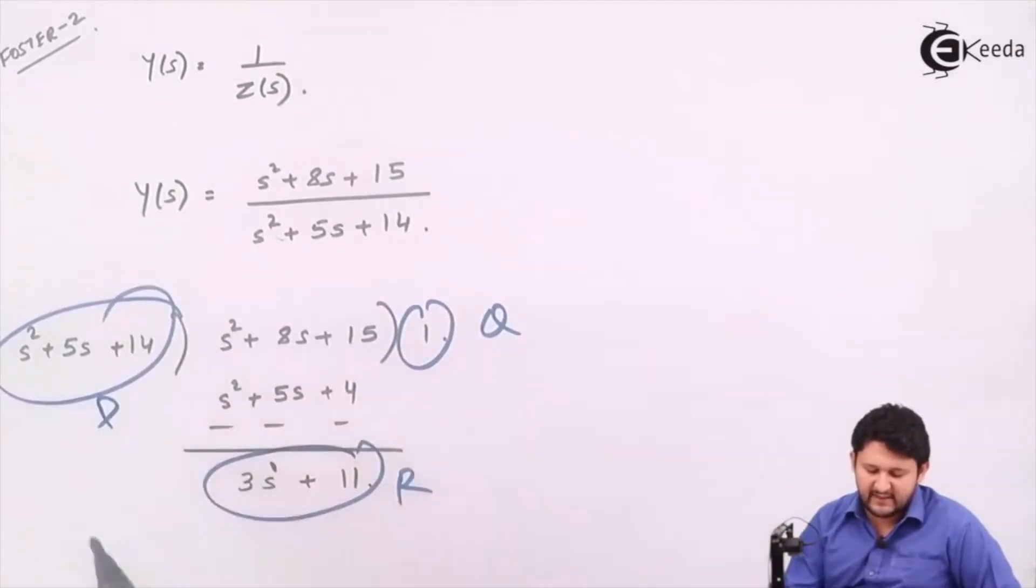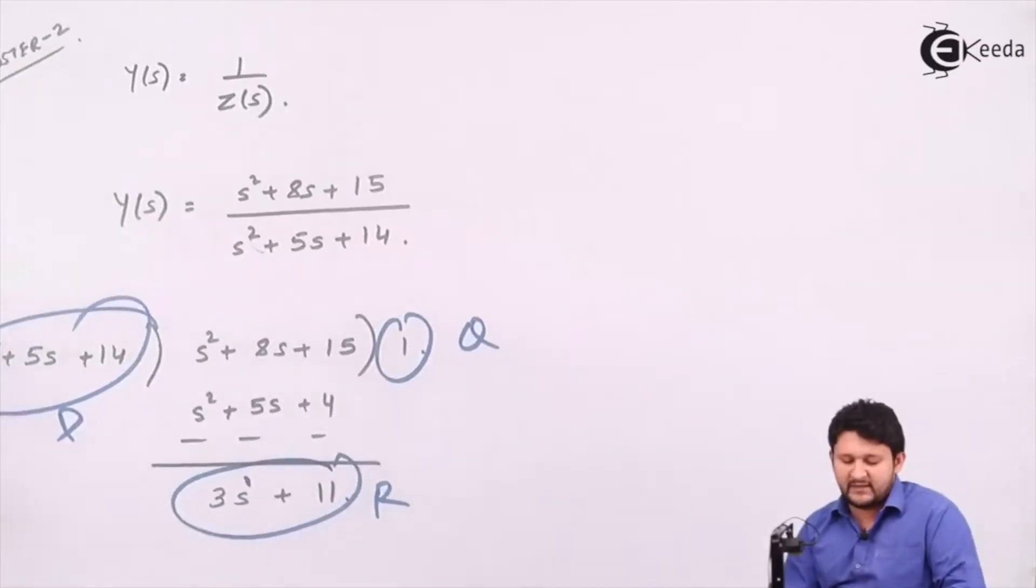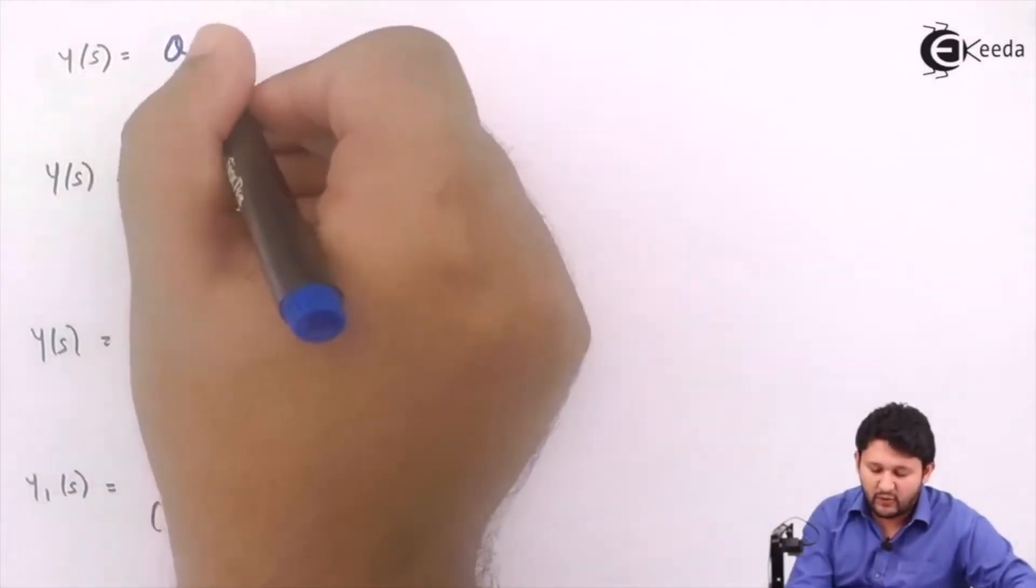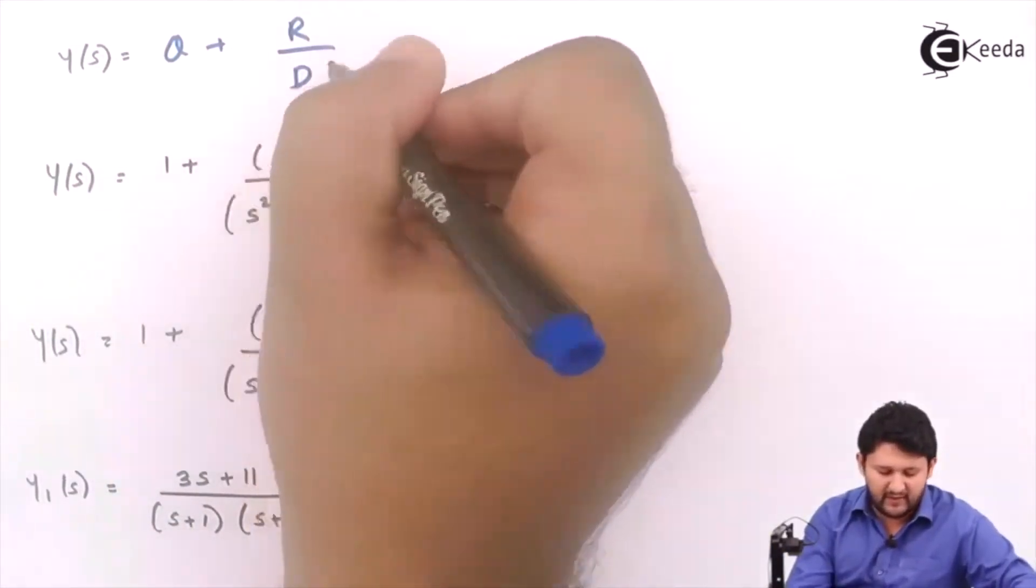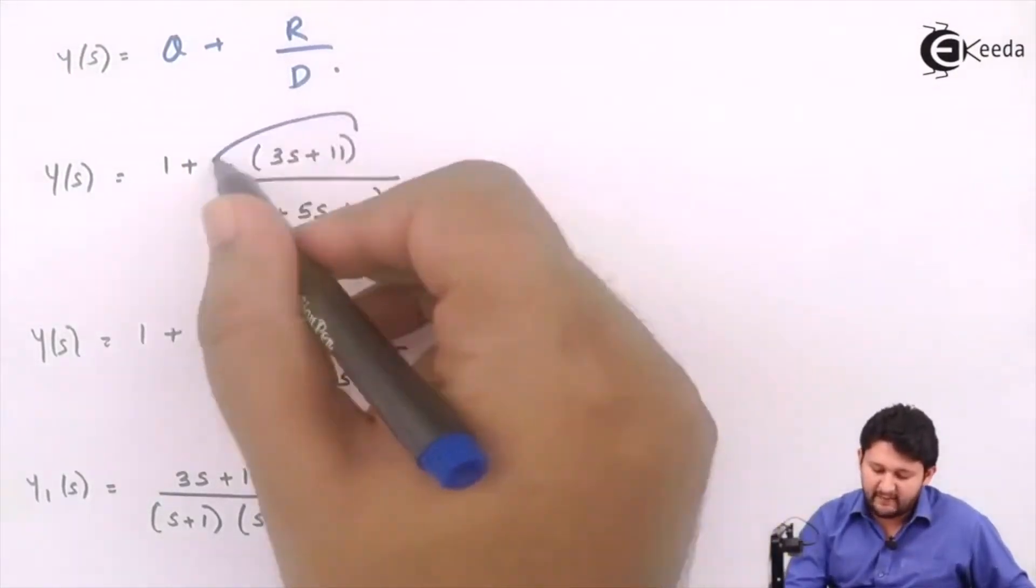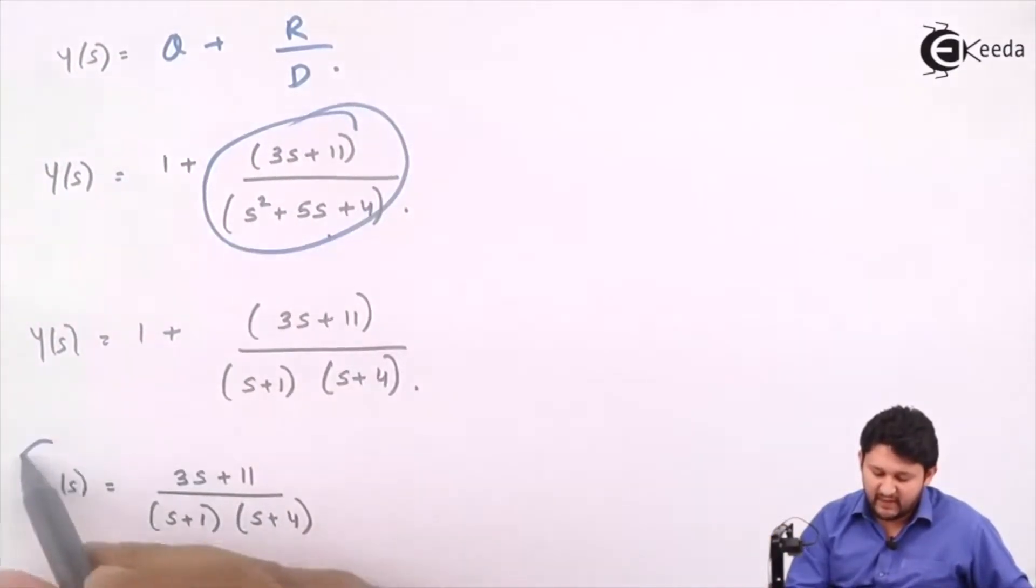This is your remainder, this is your quotient, this is your divisor. So you'll be rearranging it in the form of quotient plus remainder upon divisor, so you'll be applying partial fraction in this case.